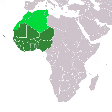Major cities in West Africa include Abidjan, Ivory Coast; Accra, Ghana; Bamako, Mali; Banjul, The Gambia; Conakry, Guinea; Cotonou, Benin; Dakar, Senegal; Freetown, Sierra Leone; Lagos, Nigeria; Lomé, Togo; and Ouagadougou, Burkina Faso.